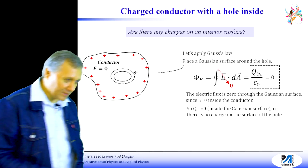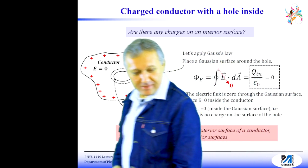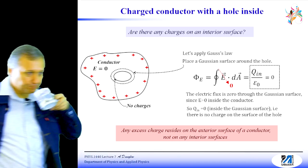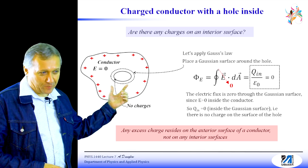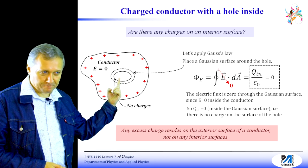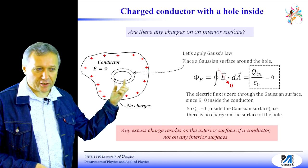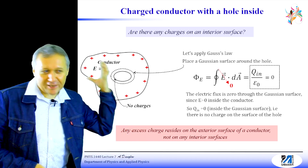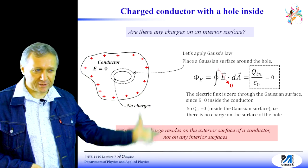It's impossible to have excess charge on the interior surface. Now, the very important consequence: what can you say about the electric field in the hole? Of course, it will be zero. Electric field inside of the conductor is zero, there is no excess charge on the interior surface, and therefore the electric field inside of the hole will also be zero.